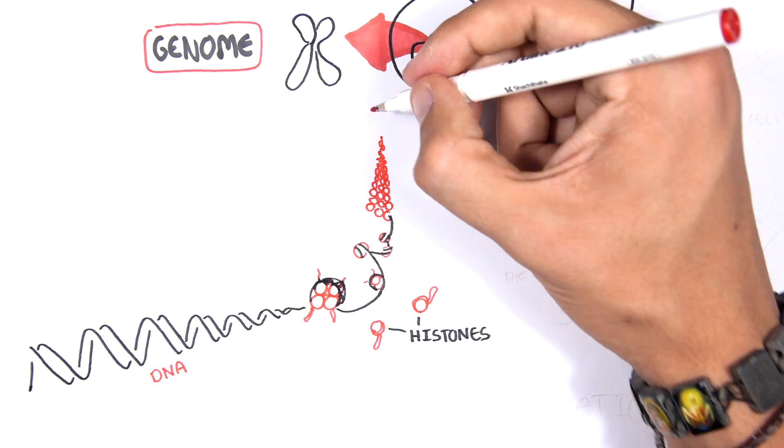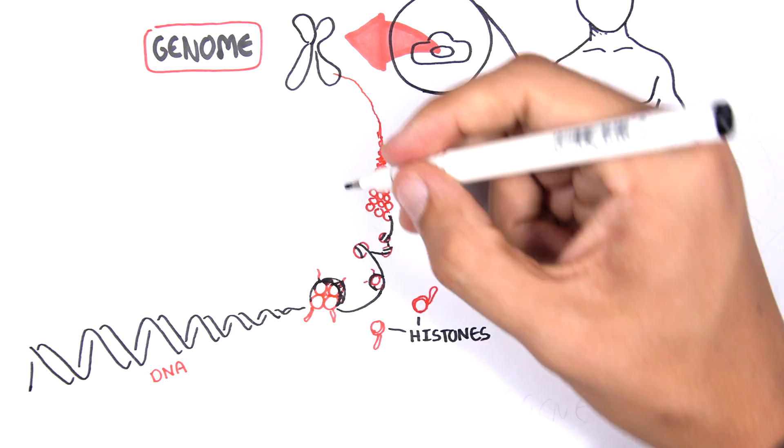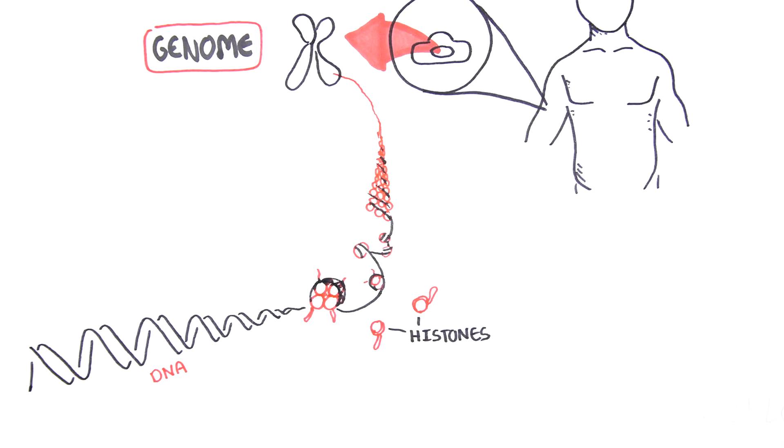DNA is wrapped around histone proteins forming repeated units of nucleosomes that look like beads on a string. Chromatin is condensed further to form a chromosome. We have 46 chromosomes in total, stored in the nucleus.